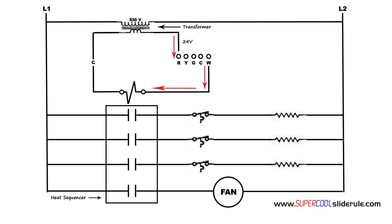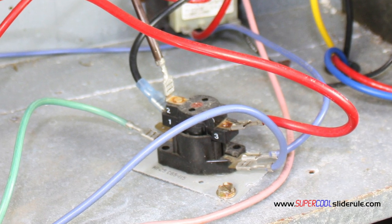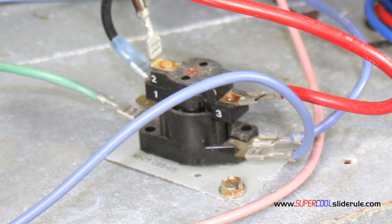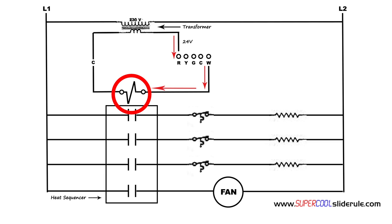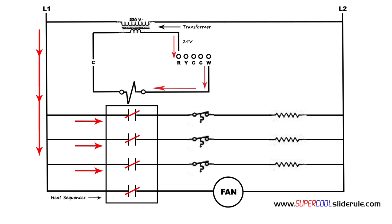The low voltage is connected to the coil of the heat sequencer or relay. The coil in this application is located on the bottom terminals located here. When this coil is supplied with low voltage, it causes the contacts to close, allowing electricity to flow through it.